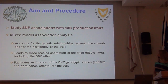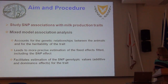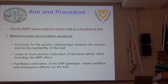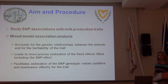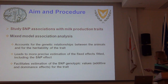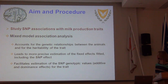This procedure accounts for the genetic relationships between the animals and for the heritability of the trait. It leads to a more precise estimation of the fixed effects that we fit, among them that of the SNP effect — which is what we are interested in estimating. It also facilitates the estimation of the SNP genotypic values and the additive and dominance effects of each SNP on the trait.